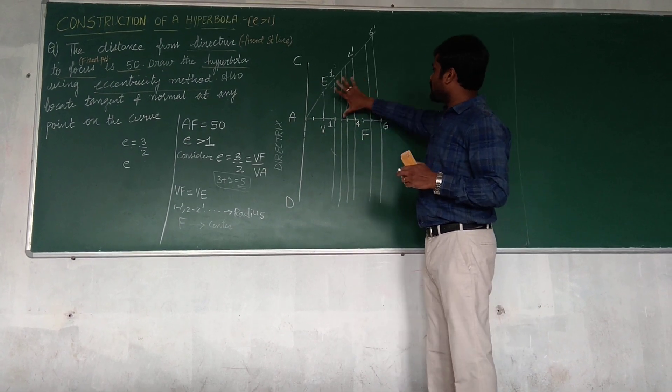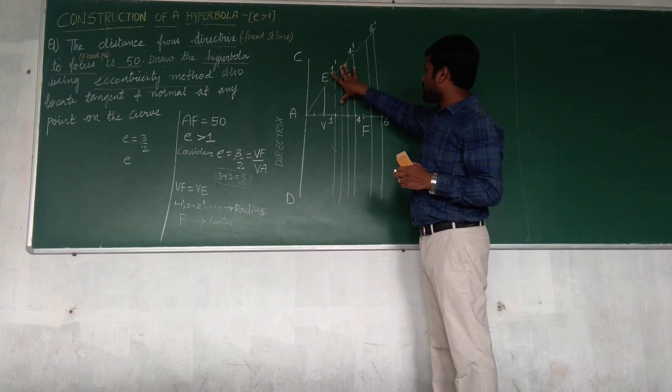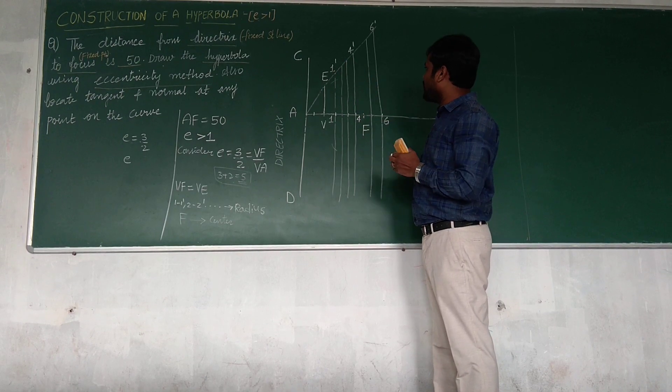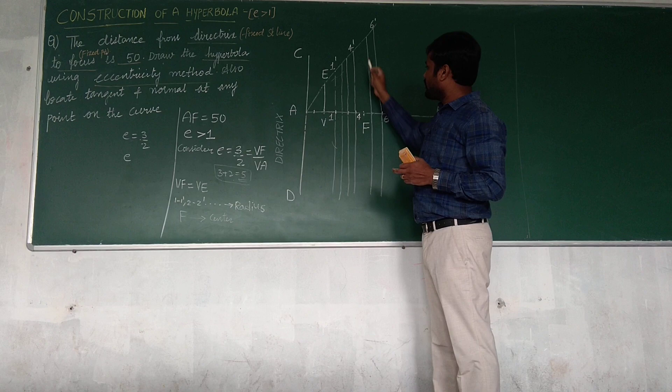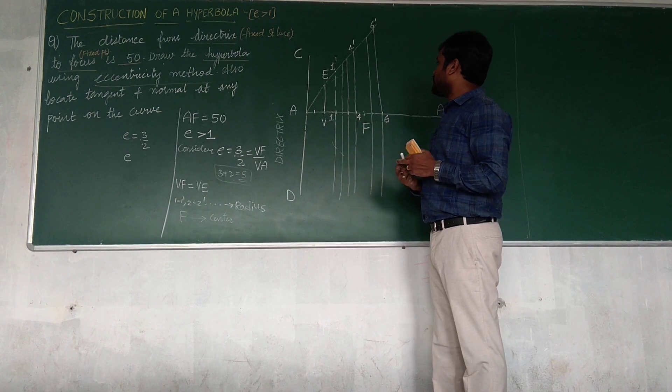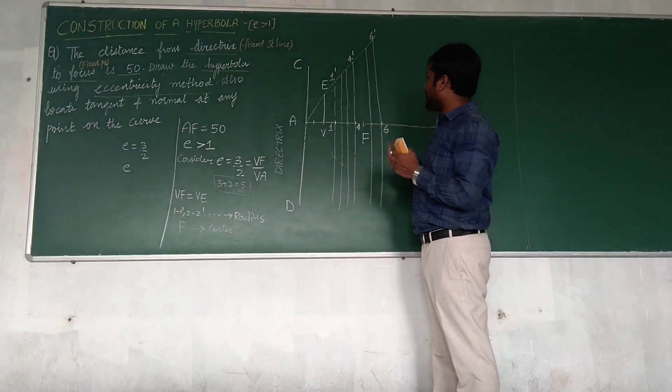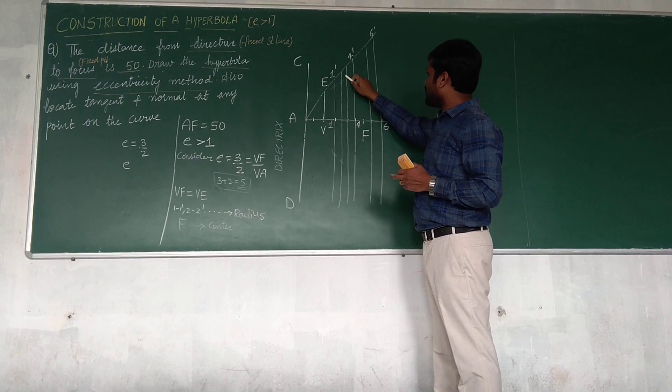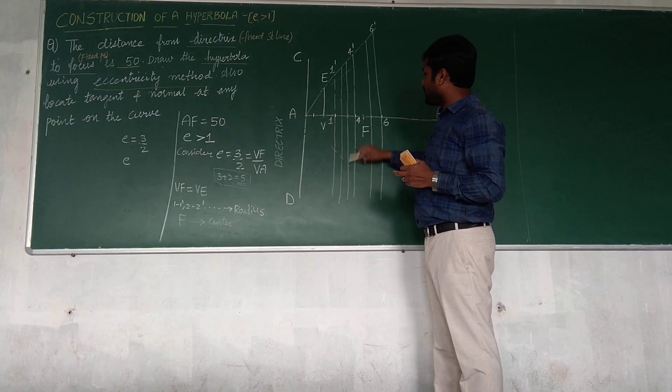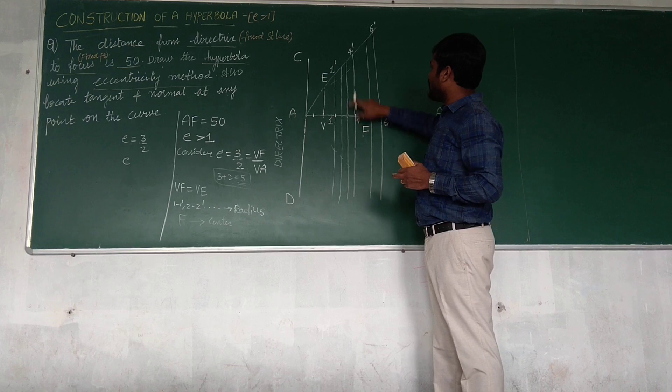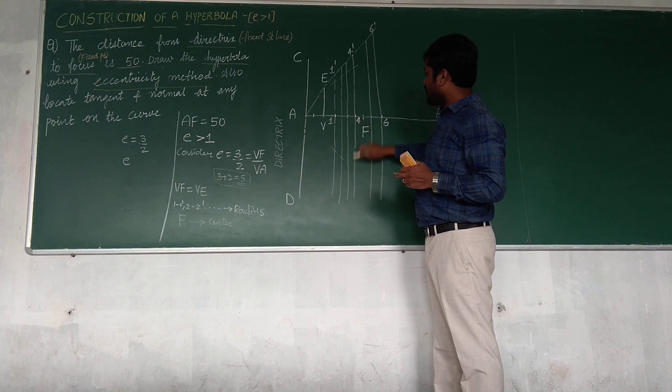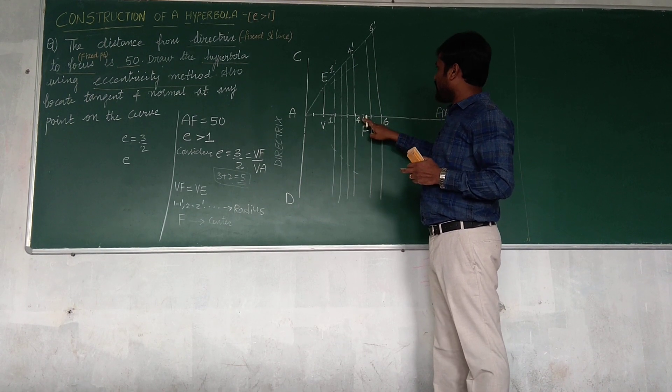Similarly next, go to second, 2, 2 dash is the radius, F as center, cutting second line. Next this is 3, 3, 3, 3 dash is the radius, F as center, cut third line. Similarly proceed with 4, 4 dash, above and below, whereas F is center.